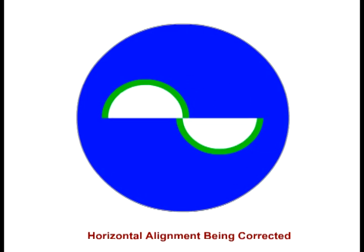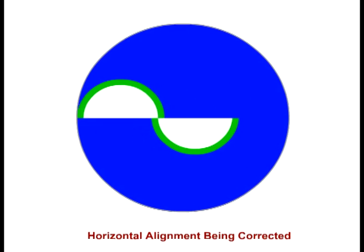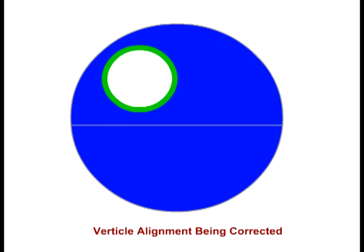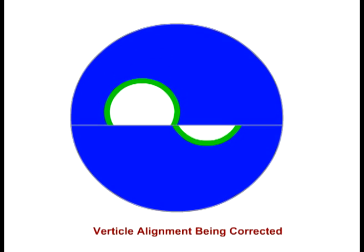This part of the video shows inaccurate horizontal centering which is being corrected. This part of the video shows inaccurate vertical centering which is being corrected. Thickness of mires should be around one-tenth of the total diameter of the flattened area. Thick mires can lead to overestimation.